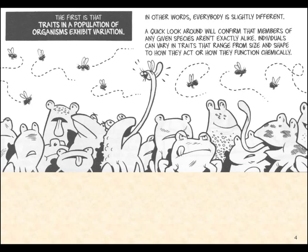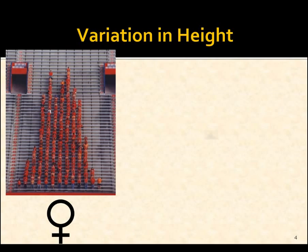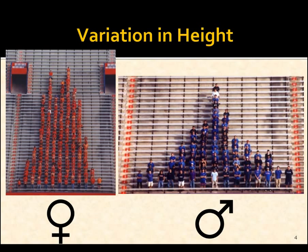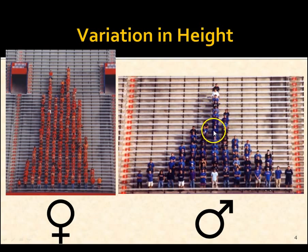A quick look around will confirm that members of any given species aren't exactly alike. Individuals can vary in traits that range from size and shape to how they act or how they function chemically. Here you can see an example of men versus women — variation in height. This is the tall end, this is the short end, and a lot of people are in between. There is a lot of differences in nature.